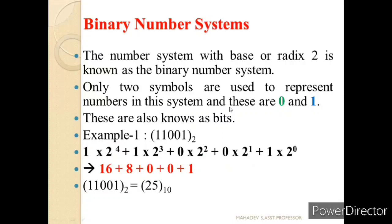Now let us look at binary number systems. The word 'binary' means 2, so the base or radix is 2. It has only 2 digits — 0 and 1 — also called 2 symbols. When we see a problem, we look at the base; since the base is 2, all numbers are represented as powers of 2.